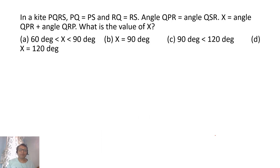So we have kite PQRS where PQ equals PS. We'll draw the kite PQRS. That's a kite where PQ equals PS and RQ equals RS. Angle QPR, this angle, is equal to QSR.